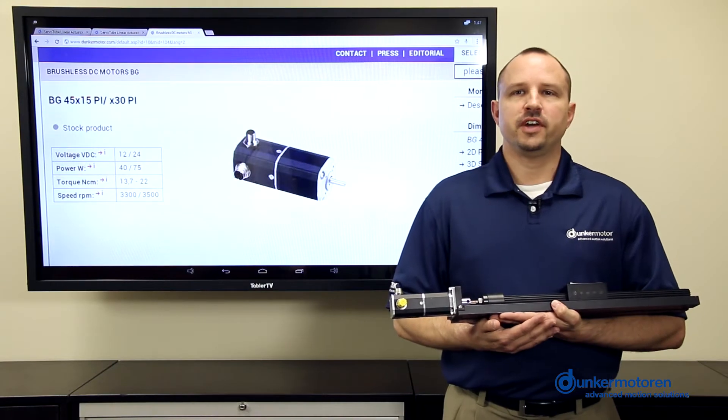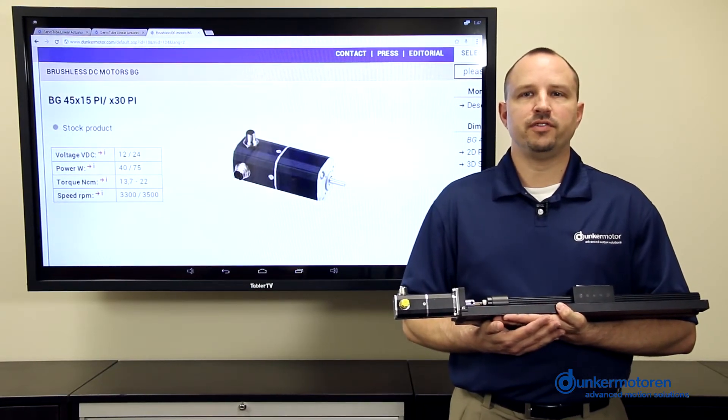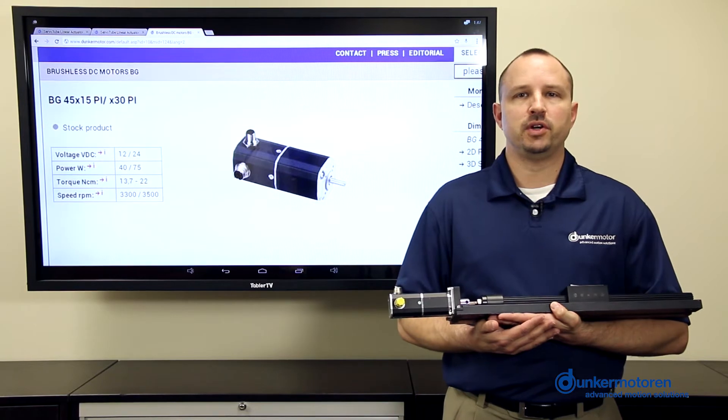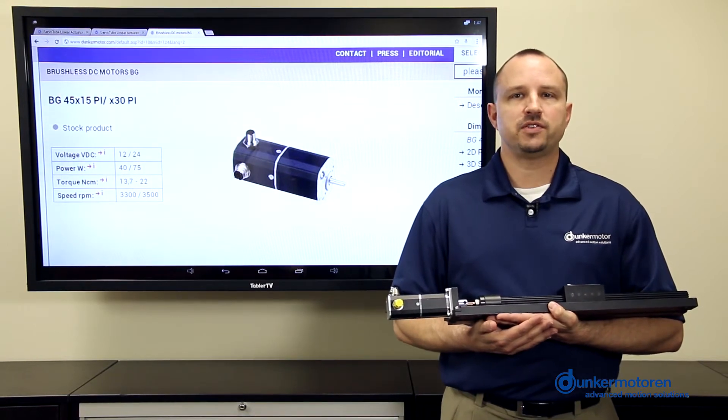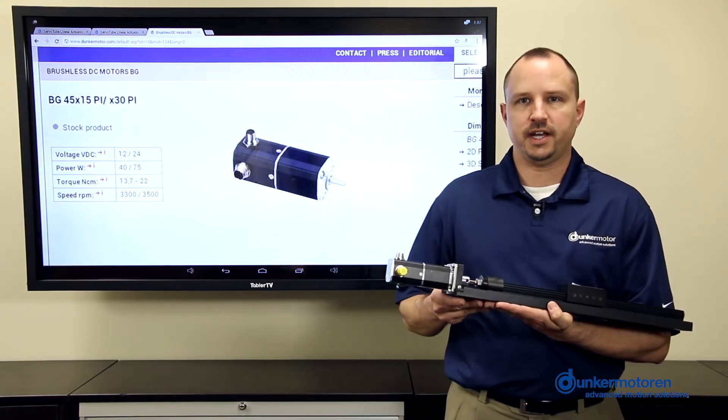The recent development of our NEMA flange adapter kits makes it possible and very easy to mount Dunker's metric motors to standard NEMA mounts as shown with the RGW slide here.